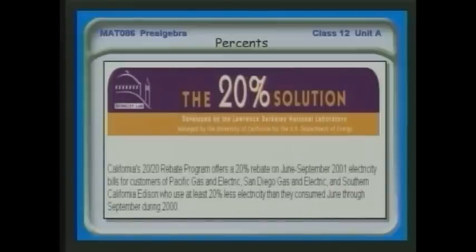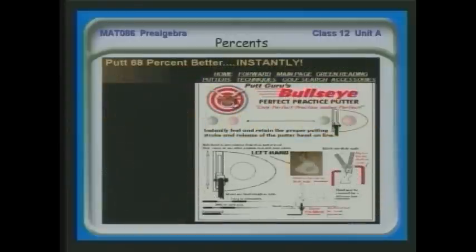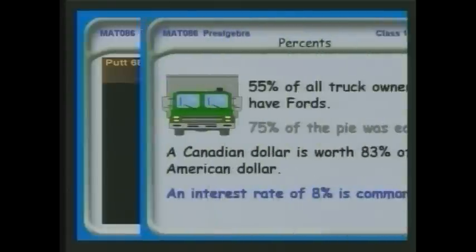Here's a good one from California: the 20% solution. If you use 20% less electricity, they'll take 20% off of what you pay for electricity. And my very favorite: putt 68% better instantly. The point is that everywhere you look, we use percents. It's very common, and most of you probably already have a feeling for what percent means.